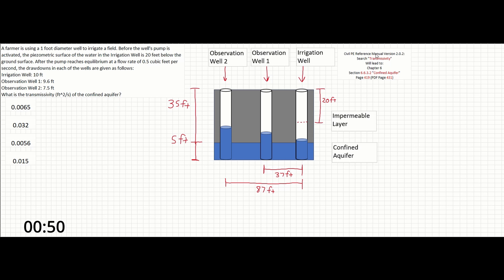We can start this problem by searching in the manual for the word transmissivity. The second instance of this word will take you to page 419 for the section on confined aquifers. This is the section we want since we can see that we have a confined aquifer in this problem.